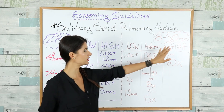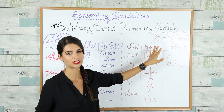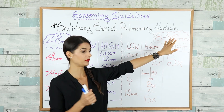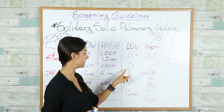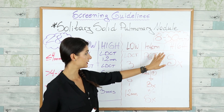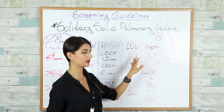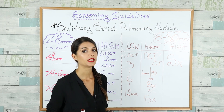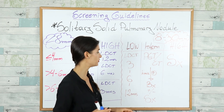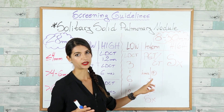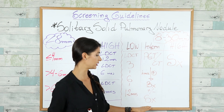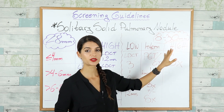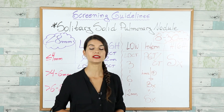For nodules 8 to 30 millimeters, we also use intermediate pre-test probability. In low pre-test probability patients, repeat low-dose CT at 3, 6, and 12 months. In intermediate probability, skip low-dose CT and go straight to PET CT scan to evaluate metabolic activity — if high metabolic activity is seen, proceed to biopsy and possibly surgery. In high pre-test probability patients with a nodule 8-30mm, perform surgery immediately as the lesion is most likely cancerous.